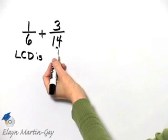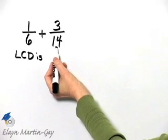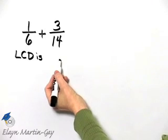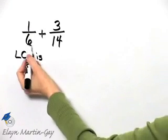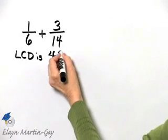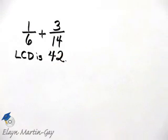So let's do 14 times 3. 14 times 3 is 42. I know 14 then divides into 42 evenly. Does 6 divide into 42 evenly? The answer is yes. So my LCD here is 42.